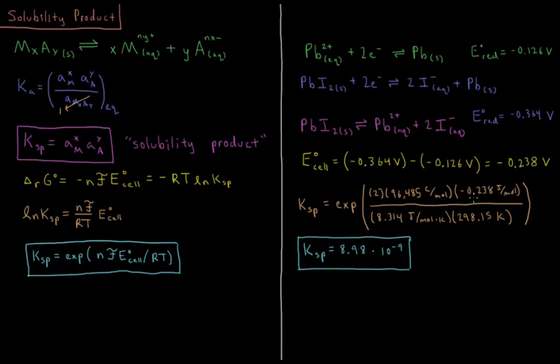negative 0.238 joules per coulomb, divided by 8.314 joules per mole coulomb times 298.15 Kelvin, if I assume this reaction is occurring at 298 Kelvin.